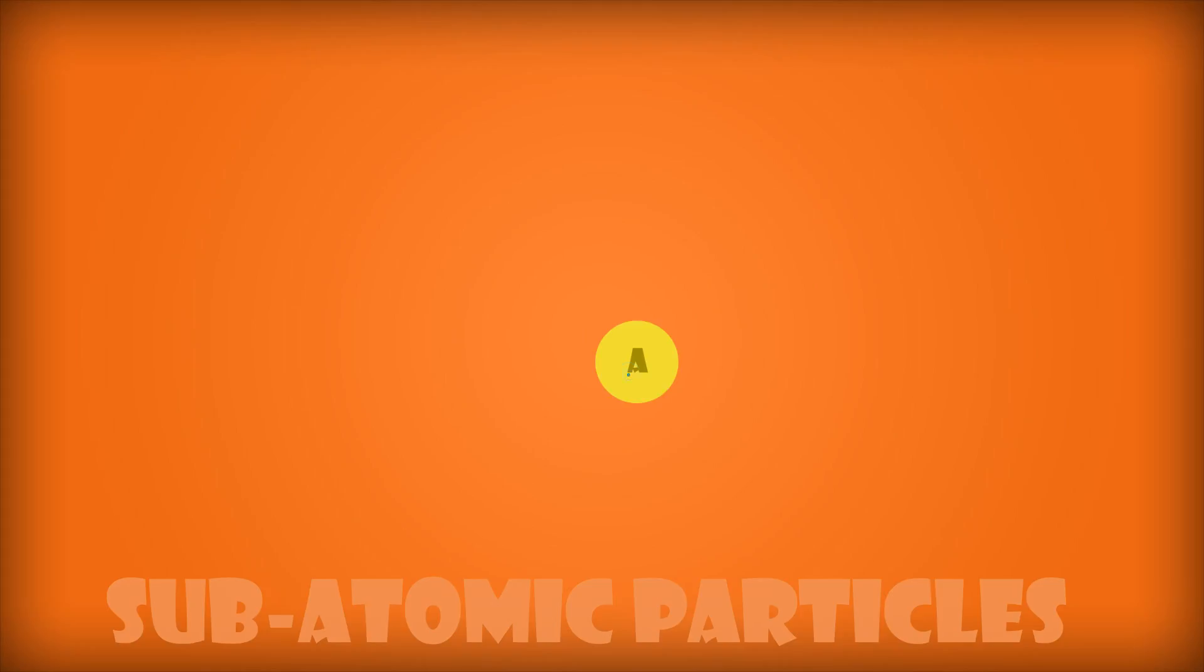Let's look at the simplest element, hydrogen, which has a positive proton in the middle and a negative electron revolving around it.